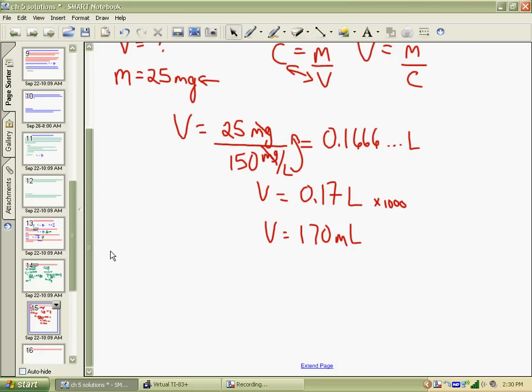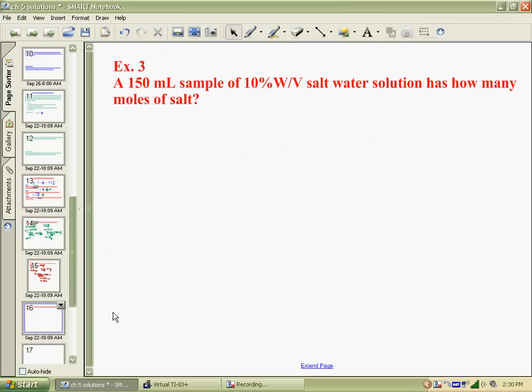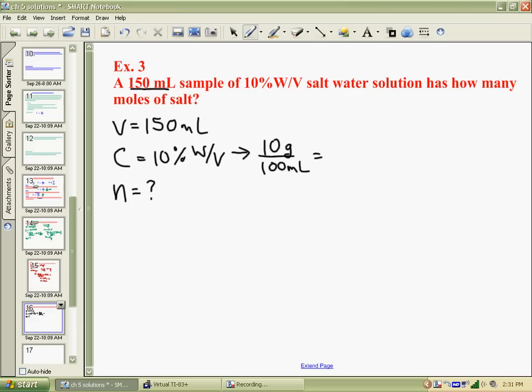I've got lots of time, so we'll take a look at our third example. The third example is a 150 mil sample of 10% weight to volume saltwater solution at how many moles. Again, 150 mils is my volume. My concentration is 10% weight to volume, and I want to know how many moles I have. Well, in this question, as soon as I see 10% weight to volume, we saw in the last question, that's 10 grams per 100 mil, which of course, 10% would be 0.1 grams per mil. And here I have milliliters. As soon as you're using percent weight to volume, your concentration is mass over volume.